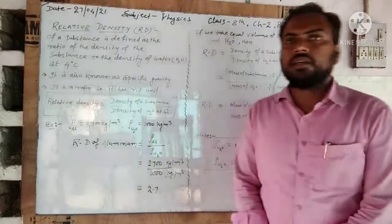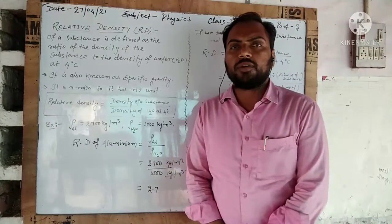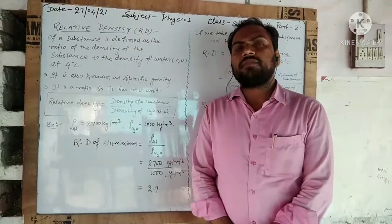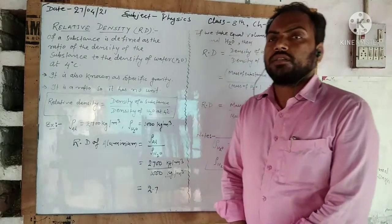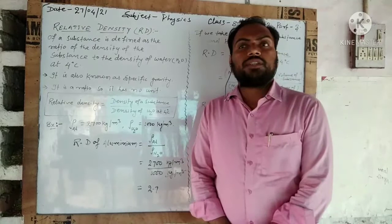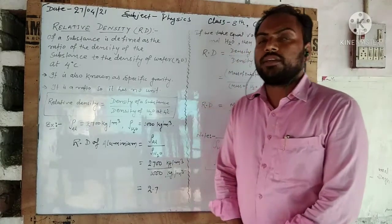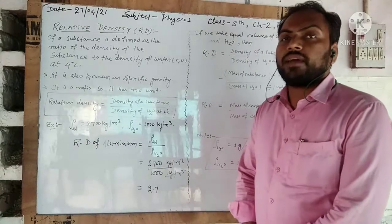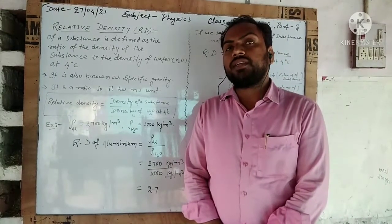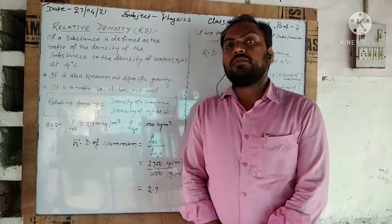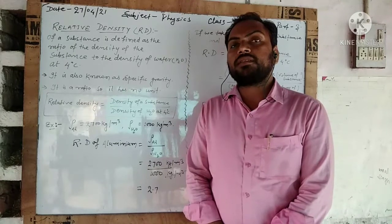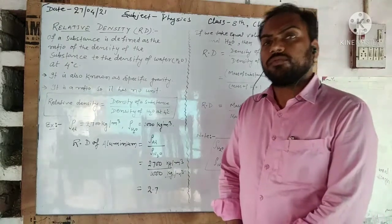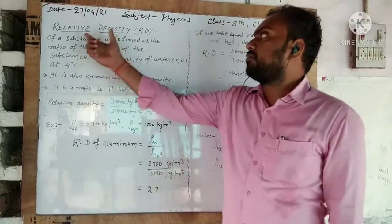Hello dear students of Class 8. We are going to start the next topic of the second chapter, that is density — mainly relative density. In the second chapter, we have to study and measure the density of substances. In the first video we studied what is density and how to find the density of a solid. In the second video we studied finding the density of liquids using a measuring cylinder, beam balance, and density bottle. Now we move to the next topic: relative density (RD).